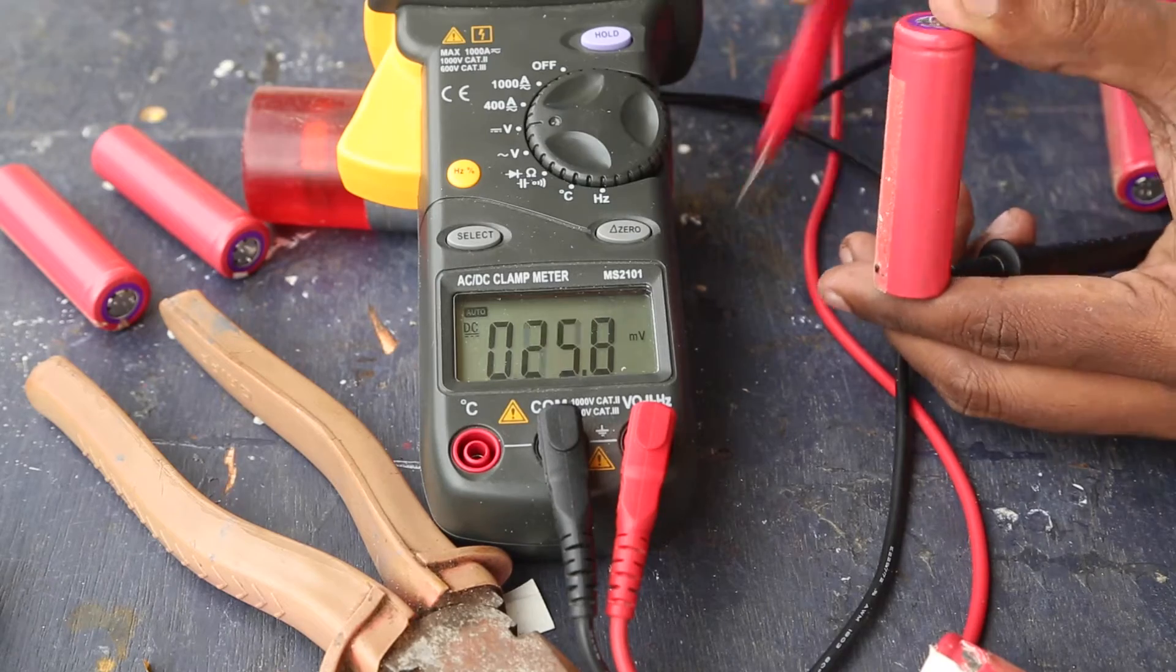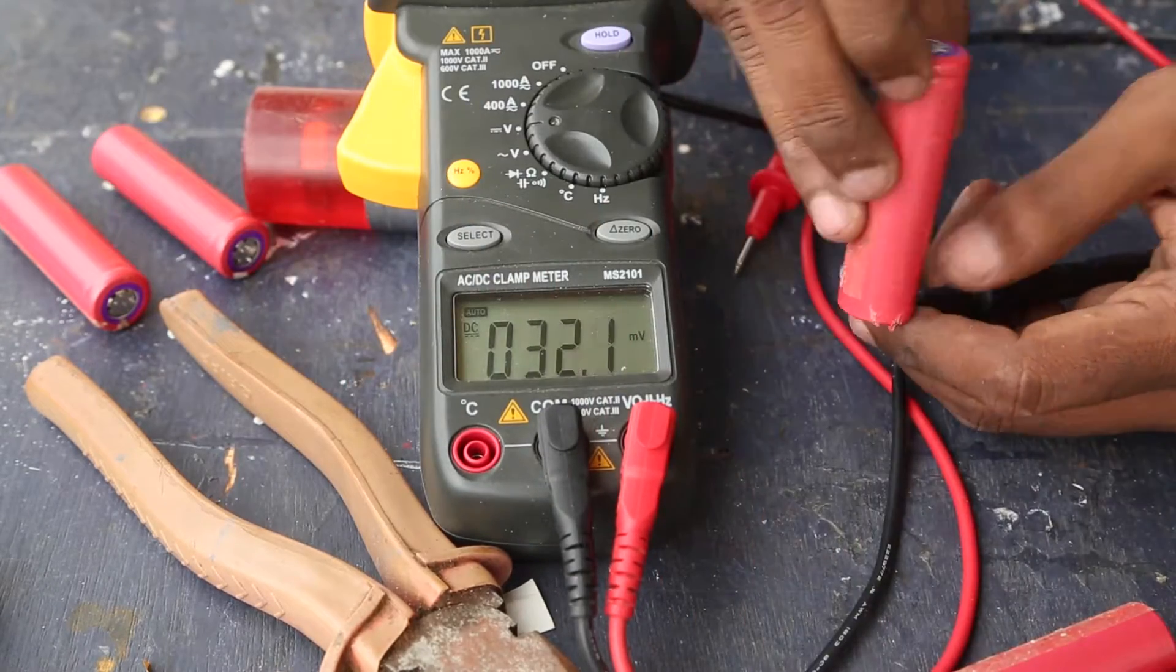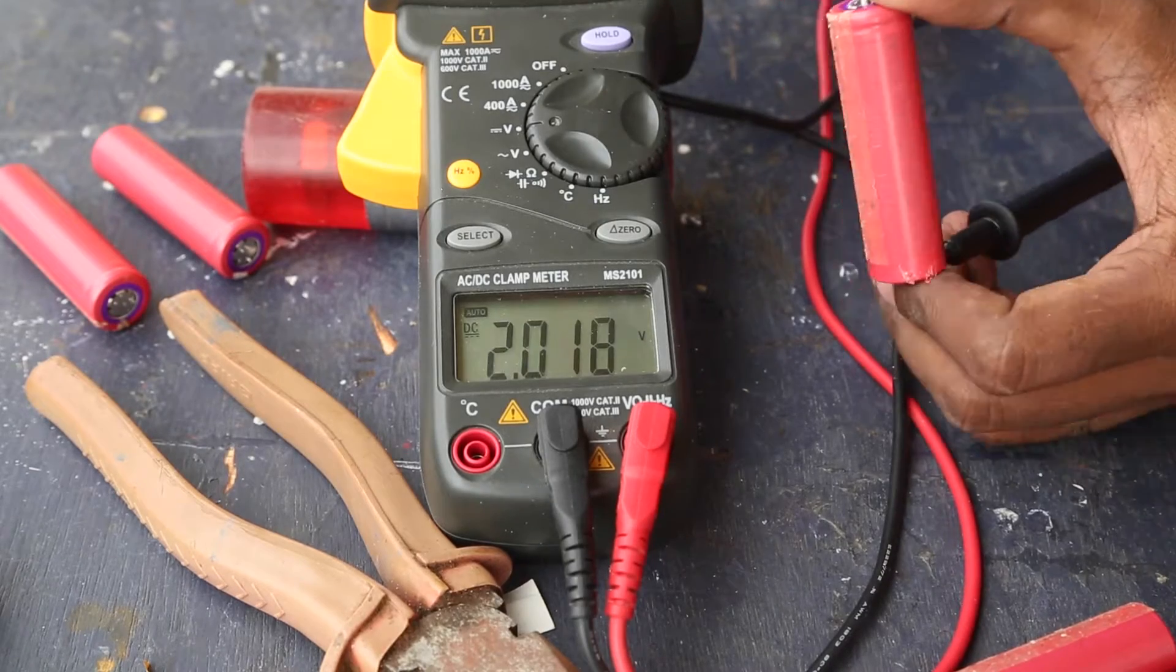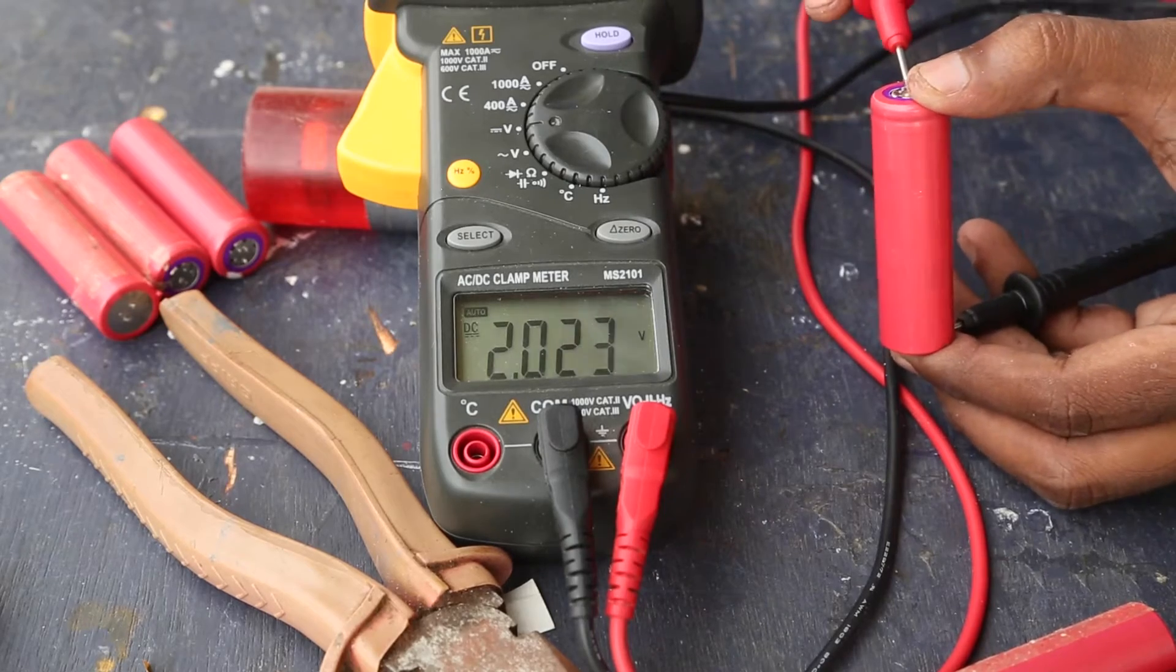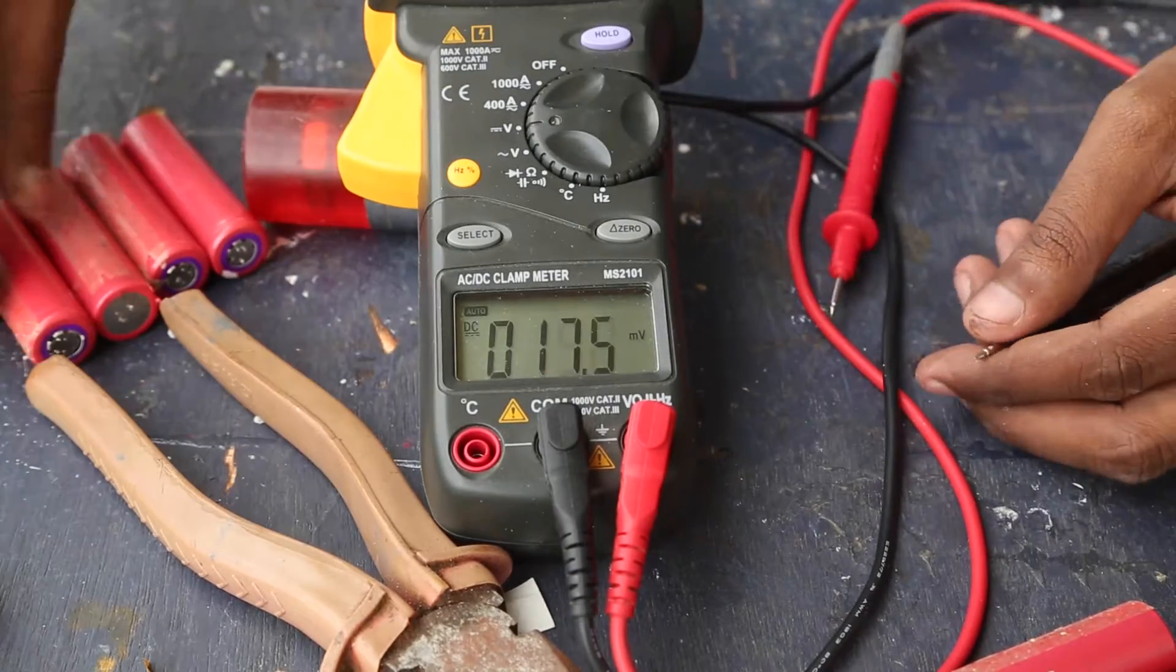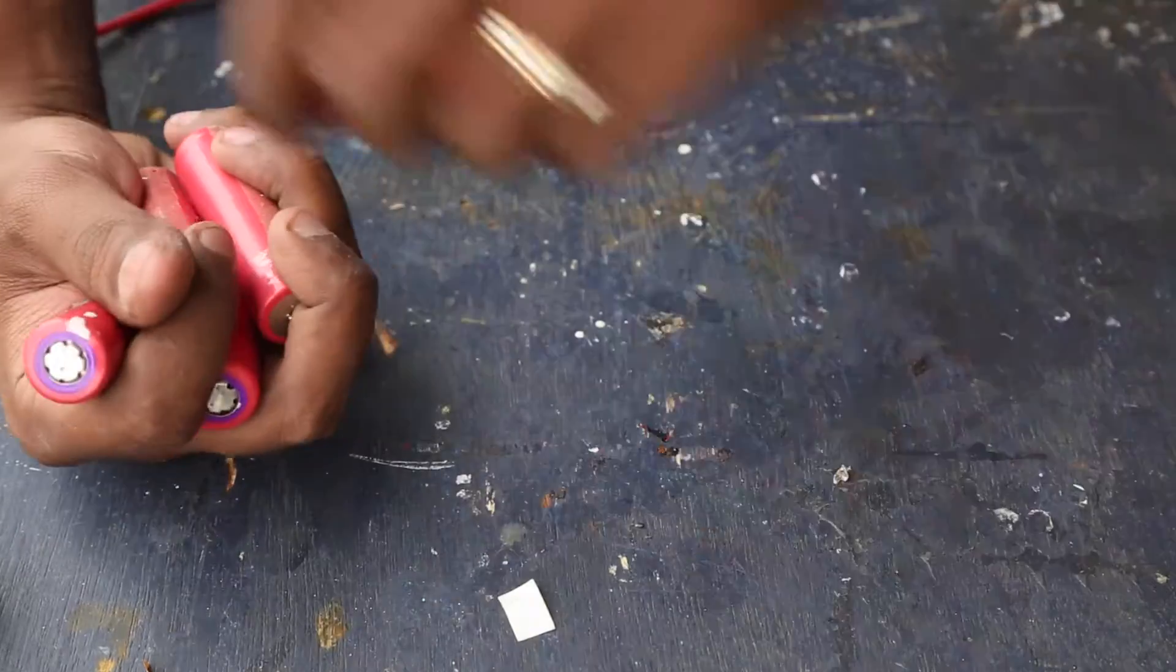The other one is also 0.6 volts. So that's two batteries down. Let's see if the rest two are any good. Yep, they measure around 2 volts. So I think I might be able to use them after charging. So from this old laptop battery, I was able to get four good batteries.